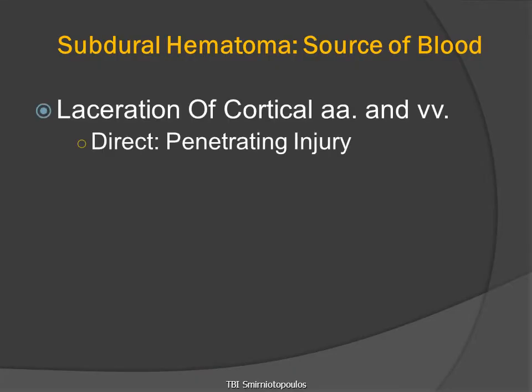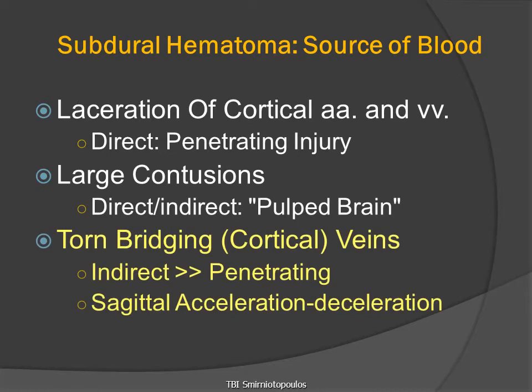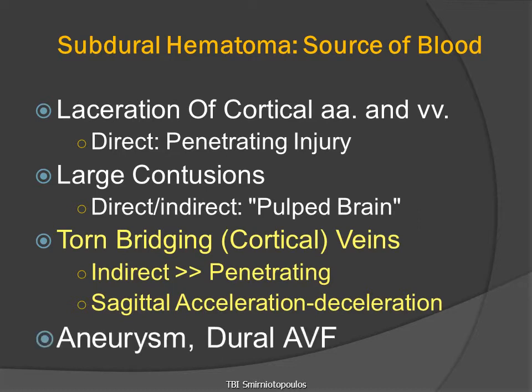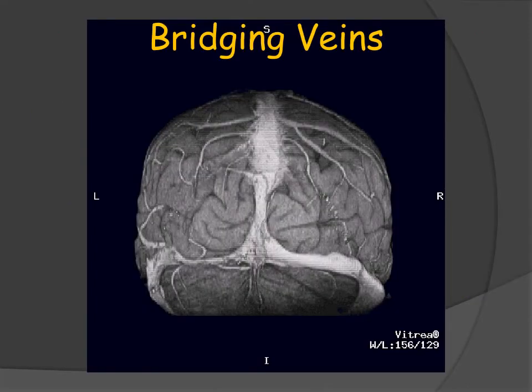So what is the source of bleeding into the subdural space? It can be penetrating injury with direct trauma and laceration, or pulpification from large contusion. But very commonly, it is due to inertial forces from acceleration or deceleration tearing the bridging veins. Blood can also enter the subdural space from ruptured aneurysms and dural arteriovenous fistulas, but the primary consideration is tearing of bridging veins.